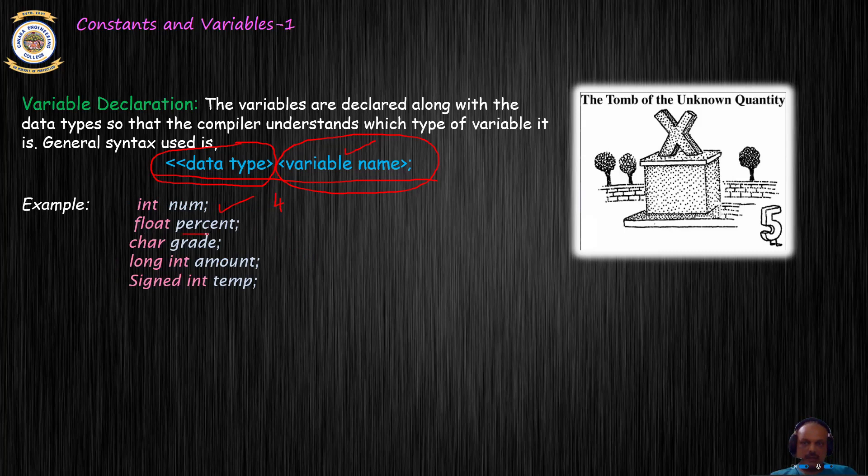Character grade. So grade is the name of the variable of type character. So 1 byte gets assigned to the name grade.